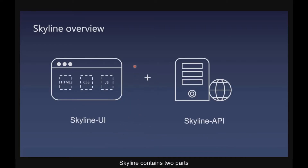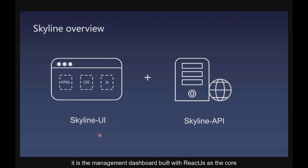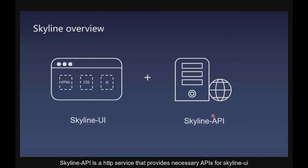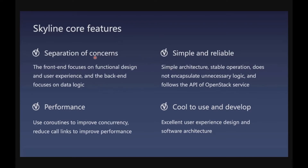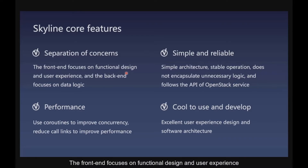Skyline contains two parts. The first part is Skyline UI — a management dashboard built with React.js as a core, which runs in the browser. Skyline API is an HTTP service that provides the necessary APIs for Skyline UI. The frontend focuses on functional design and user experience, while the backend focuses on data logic.